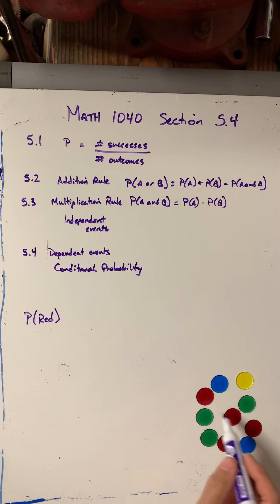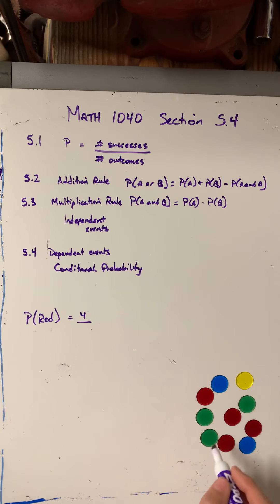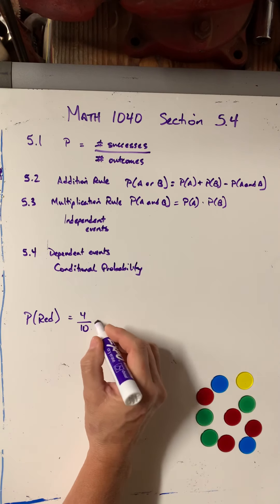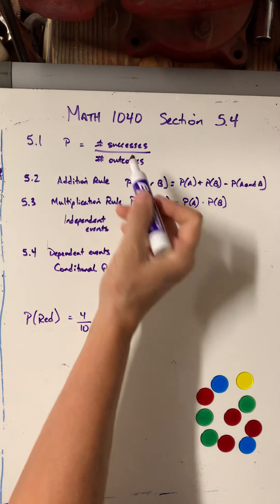Well, I have four red chips out of 1, 2, 3, 4, 5, 6, 7, 8, 9, 10 chips. So my probability is 0.4. Okay, that's from 5.1.